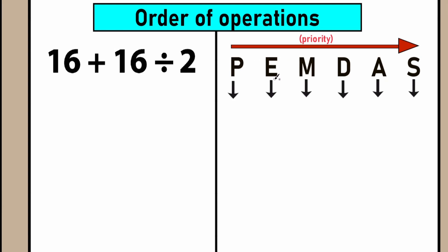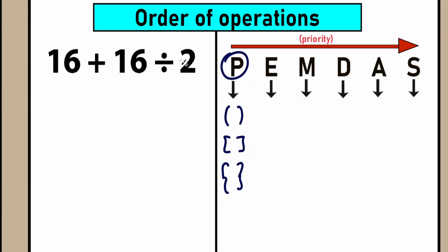PEMDAS is not an English word — it's a quick checklist. Each letter stands for something. The letter P stands for parentheses — we're talking about grouping symbols like these types of brackets. Right now let's scan our question: where do we have grouping symbols? We don't have parentheses, so we can easily skip this part.